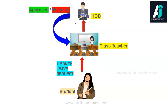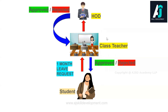If the HOD approves the leave, he passes the approved request back to the teacher, and the teacher passes the information to the student. This is a two-tier kind of approval process — the college student needs two approvals: one from the class teacher and one from the HOD. For a two-day leave it was a single-level process, but for a one-month leave it becomes a two-tier approval process.